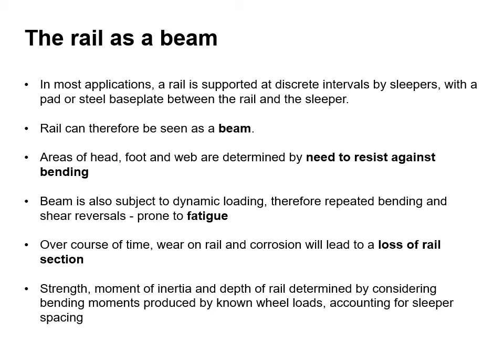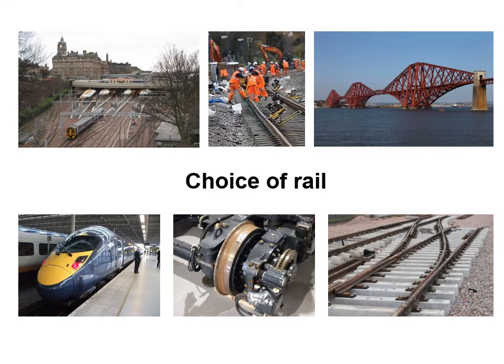Over time, wear and corrosion will lead to a loss of rail section. The strength, moment of inertia and depth of the rail are determined by considering bending moments produced by known wheel loads, accounting for sleeper spacing. Just as you would select a beam or column section, we have different choices of rail sections, and we're now going to look at how to select an appropriate rail section.